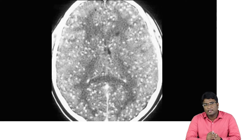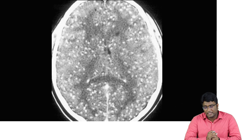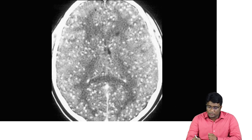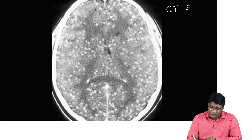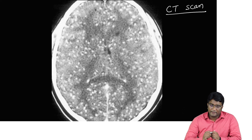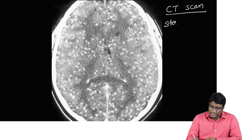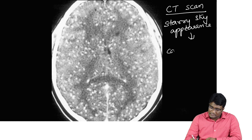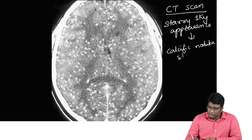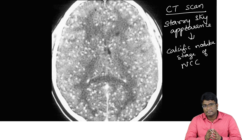This image is a CT scan showing multiple calcifications noted throughout the brain parenchyma. This CT appearance of multiple calcifications throughout the brain parenchyma is called the starry sky appearance. The starry sky appearance is a classic feature of the calcific nodular stage of neurocysticercosis.